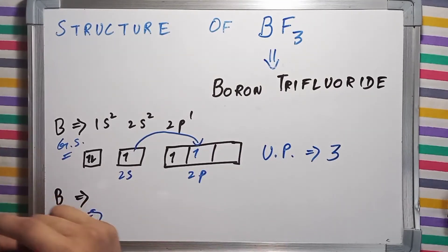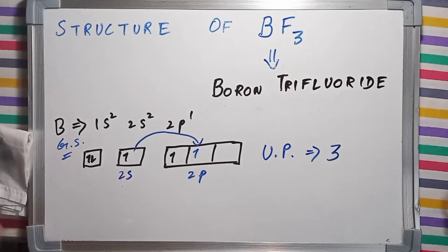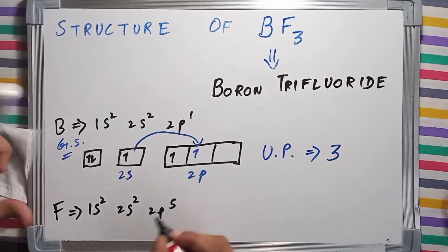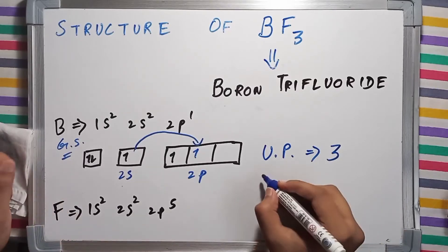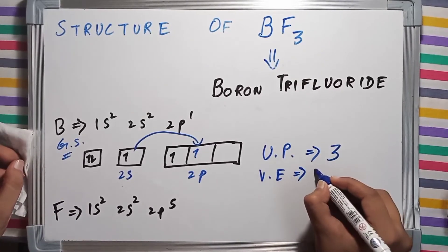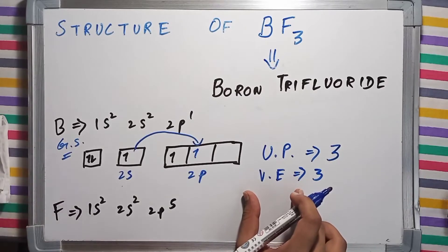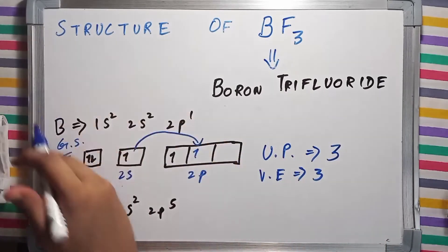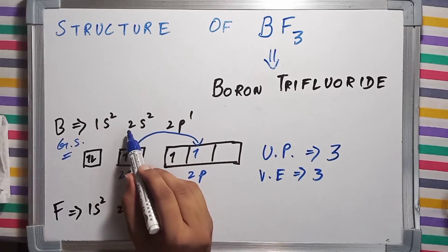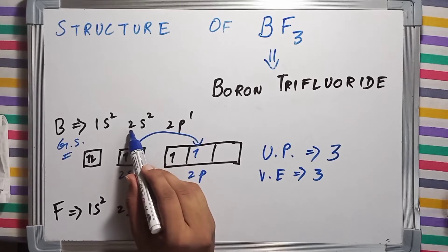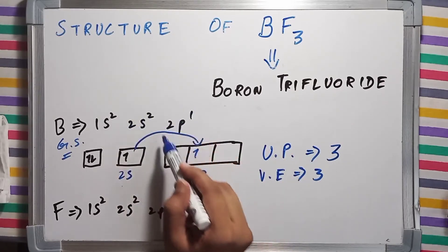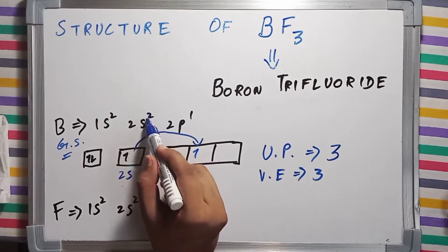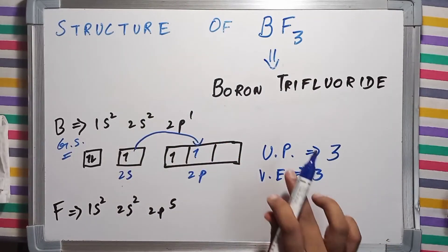Now talking about fluorine — the electronic configuration of fluorine is 1s² 2s² 2p⁵. Also, if someone asks, the number of valence electrons for boron is three, because we count the electrons present in the outermost shell. For boron, the outermost shell is the second shell, which has the 2s and 2p subshells, giving 2 + 1 = 3 valence electrons.